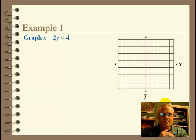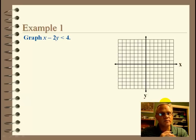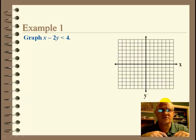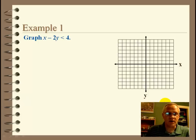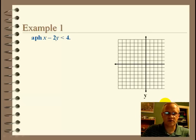Let's take a look at an example: x minus 2y is less than 4. First of all, what form of the equation would we like to put that in to graph it? We want y equals mx plus b — one of the most popular forms in algebra. So we want to get y by itself. I'm going to first subtract x.